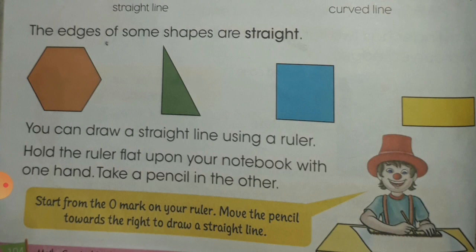Start from the zero mark on your ruler. Move the pencil towards the right to draw a straight line.